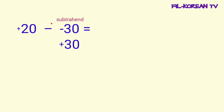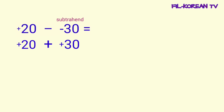Then, itong subtraction sign o subtraction operation, papalitan natin ng addition sign — magiging plus ito. At eto namang minuend na positive 20, kukupyahin lamang natin dito. Ayan. Eto ngayon yung ating isosolve: positive 20 plus positive 30.